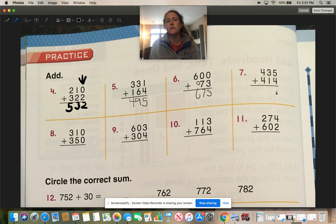5 plus 4 is 9. 3 plus 1 is 4. 4 plus 4 is 8. So 849. Now what I want you to do is you're going to do problems 8, 9, 10, and 11 on your own. So I want you to pause the video, do those four problems, and then press play. And we're going to check your answers together to see if you can do it all by yourself.